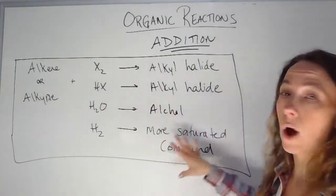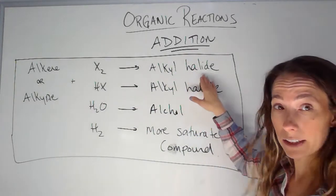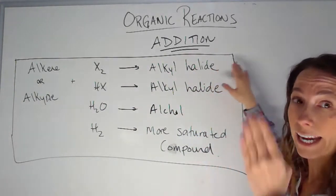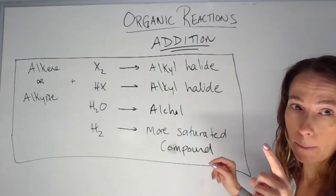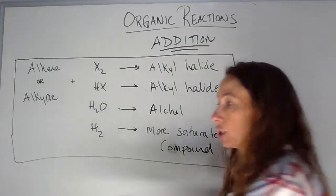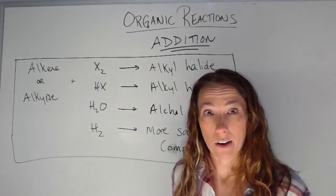And so if I have a double bond or triple bond, then I can add some players to the field. And then what I make is one product. Remember for substitution, we always had two products. We had like an alkyl halide and HCl or HBr. So I don't have this and anymore. There's just one compound made because I basically took a guy off the bench and threw him on the field. Nobody came off.